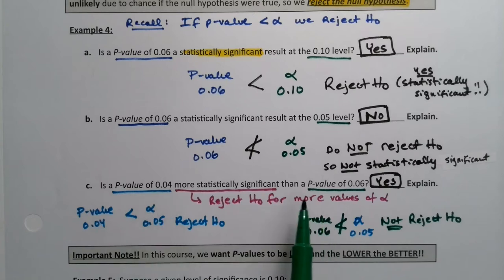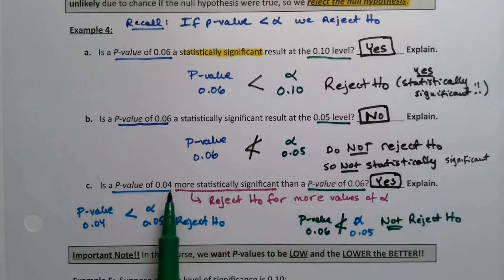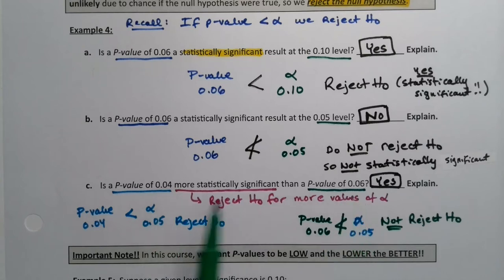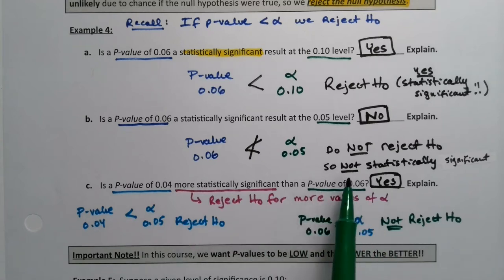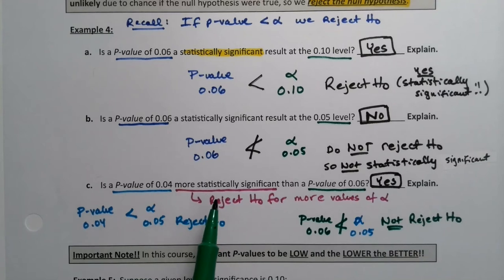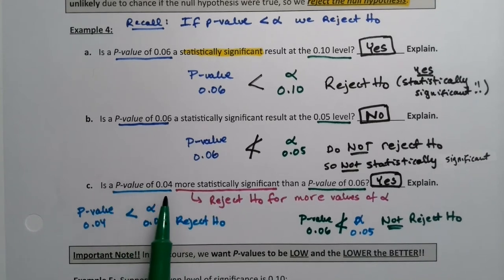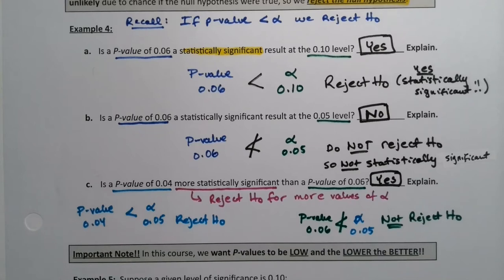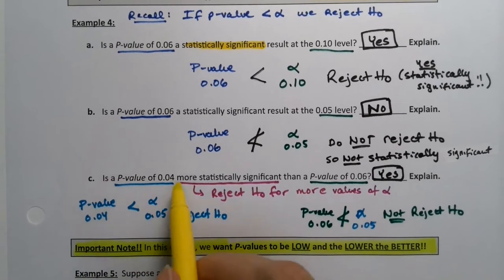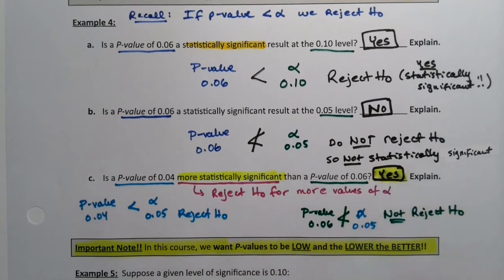For example, if alpha is 0.10, both p-values reject. Alpha 0.09, both reject. Alpha 0.08, both reject. Alpha 0.07, both reject. Alpha 0.06 — this one does not reject H-naught, whereas the lower one does. Alpha 0.055, the 0.06 does not reject H-naught but 0.04 does. Alpha 0.05 — we just did that one. So the higher p-value rejects for fewer values of alpha. The lower p-value rejects for more values of alpha, making it more statistically significant.